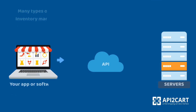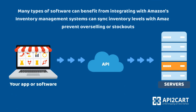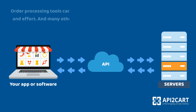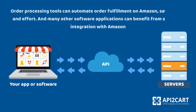Many types of software can benefit from integrating with Amazon's API. Inventory management systems can sync inventory levels with Amazon to prevent overselling or stockouts. Order processing tools can automate order fulfillment on Amazon, saving time and effort. And many other software applications can benefit from seamless integration with Amazon.